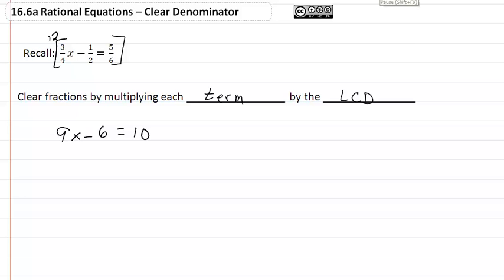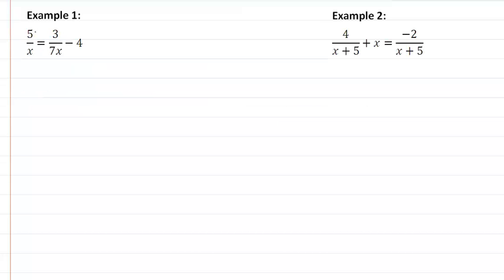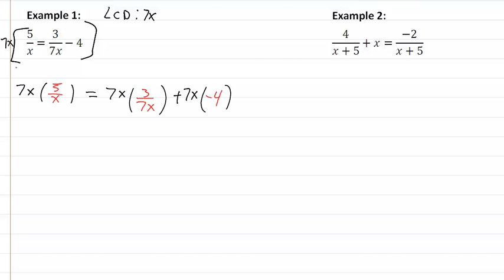Let's look at our examples. In example one, our LCD is going to be 7x. So that means we're multiplying each term by 7x. I'm going to perform a little bit of magic here. So I'm showing you that we are multiplying each term by our LCD.